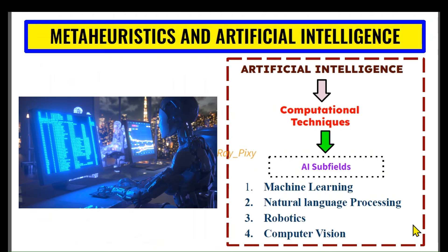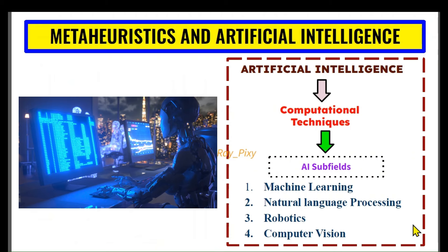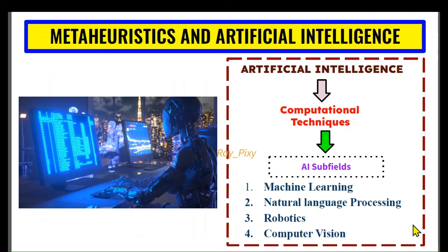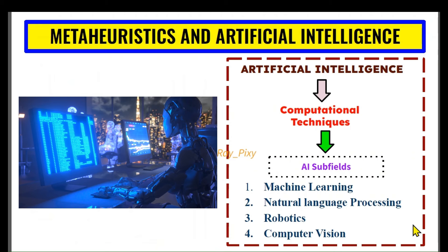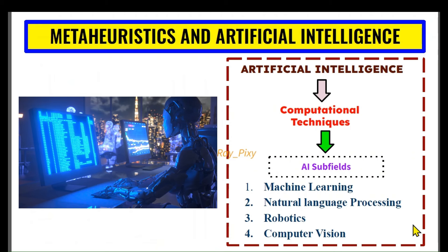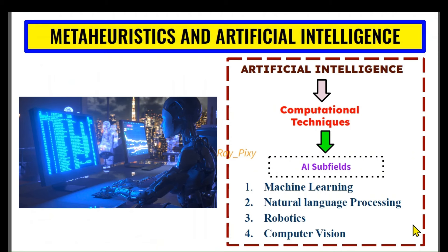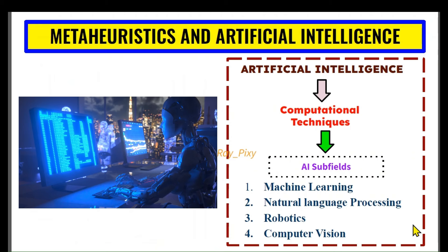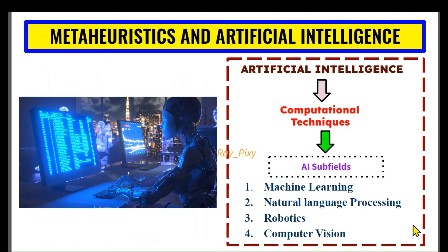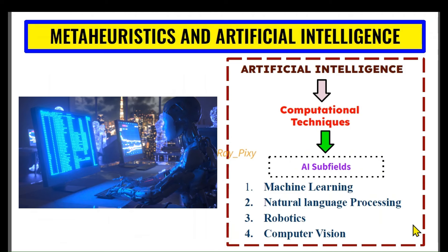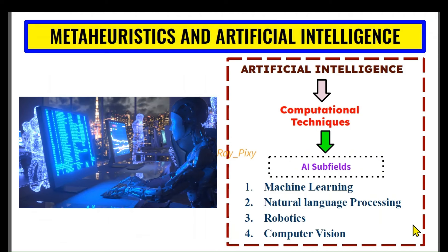Computer vision includes different methods to interpret and understand visual information from the world, such as face recognition and other techniques. The last subfield is robotics, which we will discuss with an example.